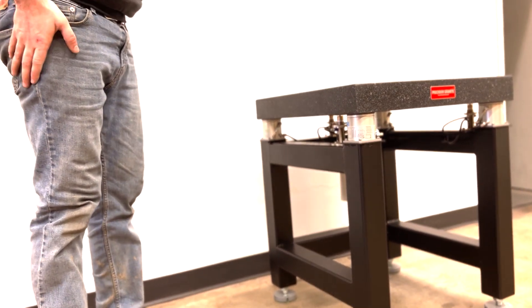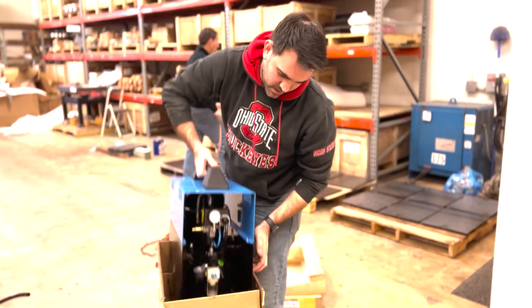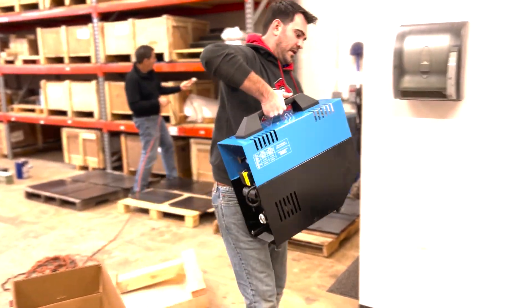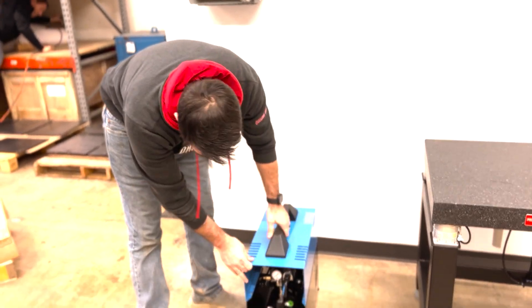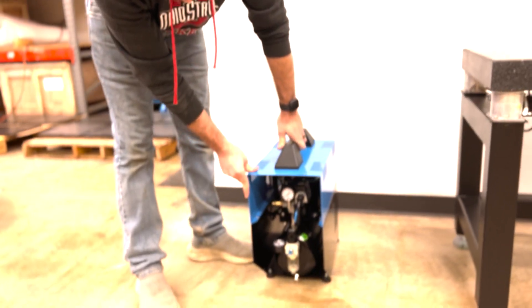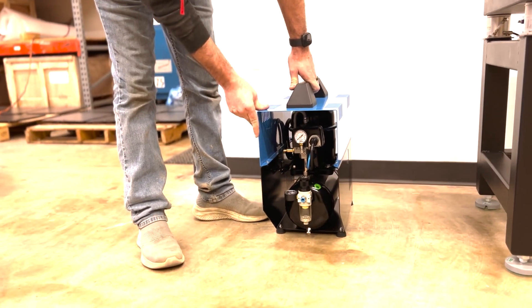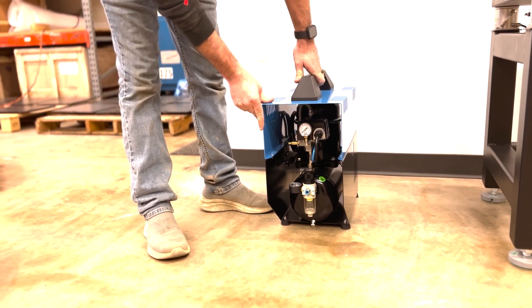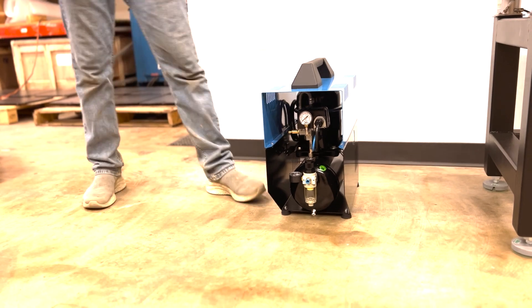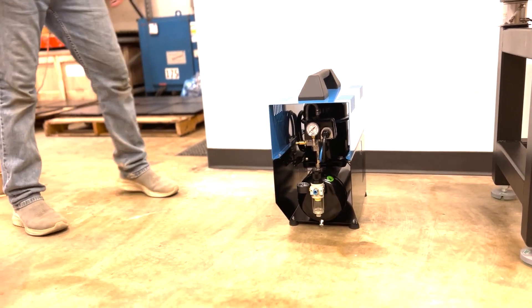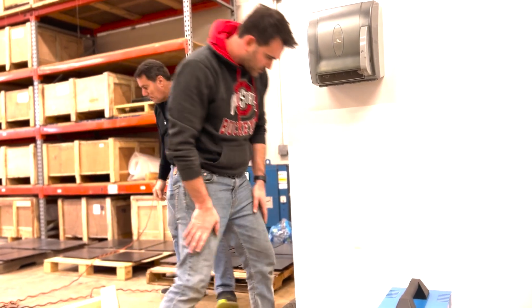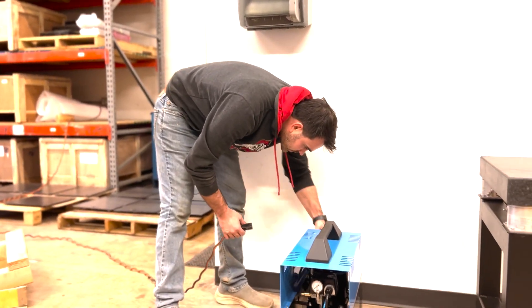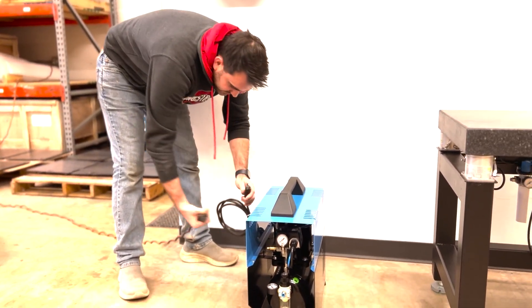So next, the table is ready to hook up to an air supply. The customer requested to be supplied with an air compressor. So we've supplied them with a super silent air compressor. This is a compressor designed to be very quiet for noise sensitive environments like labs and clean rooms. This runs off a 110 power supply.